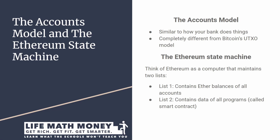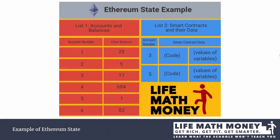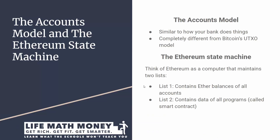Don't worry too much if you don't know what a state machine is. Think of it as a way to just represent the current data balances in the system. Think of Ethereum as a computer that maintains two lists. The first list contains the Ether balances of all the accounts, and the second list contains the data of the programs, which are called smart contracts.